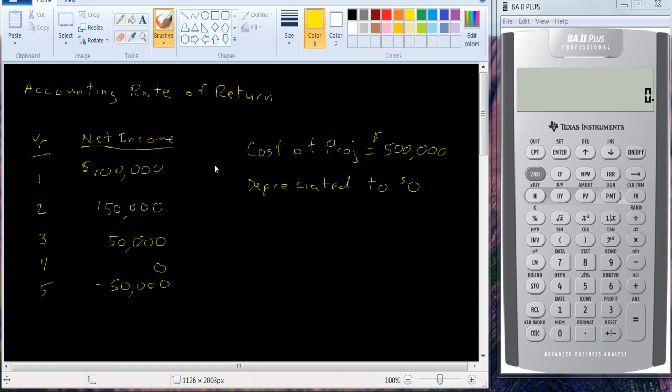Another method for evaluating an investment project is what's known as accounting rate of return. What accounting rate of return does is it looks at average net income over the average book value.